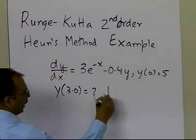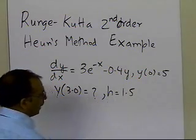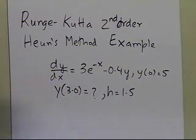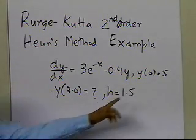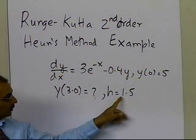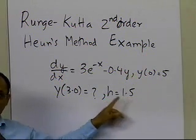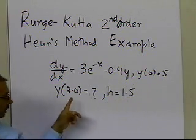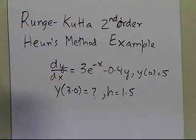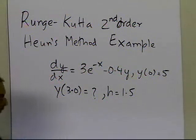I'm going to use a step size of 1.5, which basically means that starting from the initial value at x equal to 0, in one step I'll be at x equal to 1.5, and in two steps I'll be at the required point of 3.0.